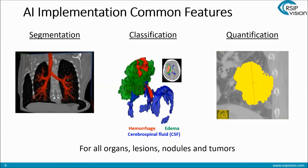And many of them also need classification. Classification basically means that once we've segmented all these things, we want to classify them into different groups. In this case, for instance, you can see the red is hemorrhage, the green is edema, and the blue is CSF. These were all segmented and then classified. Lastly, but sometimes the more important thing is quantification. These days, quantification is the key to good research, and everybody needs quantification. Quantification is also something that is next to impossible to be done manually.